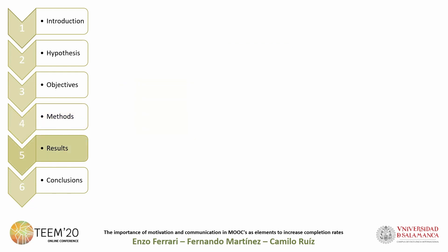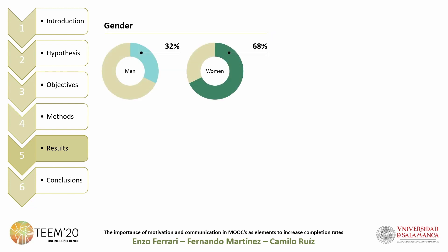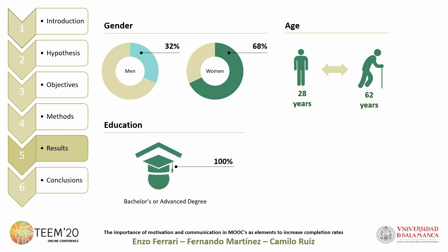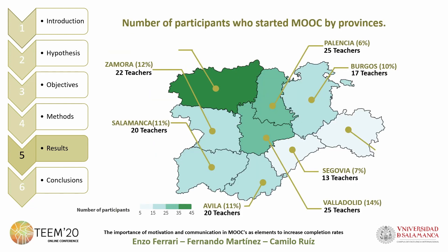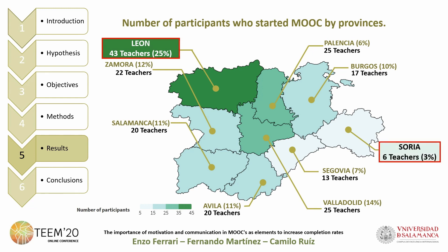As a first observation, the participants were 32 percent male and 68 percent female, with ages between 28 and 62 years. The participant students had college studies and were from Castilla and León, Spain. The province with the most participants was León with 43, representing 25 percent, and Soria had only 6, representing 3 percent.